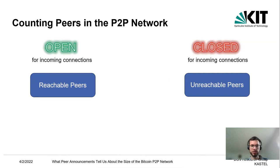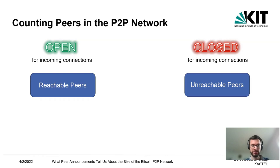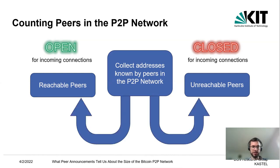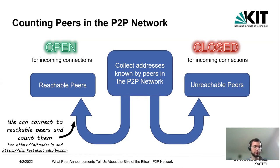In the peer-to-peer network, we have two classes of peers: reachable peers and unreachable peers, where reachable peers accept incoming connections and unreachable peers do not. One approach to count peers is to collect addresses known by peers in the network and classify them into these two classes. This is feasible for reachable peers because we can connect to them and count how many we have connected to — this is what Bitnodes does, and what we also do with our Bitcoin monitoring.